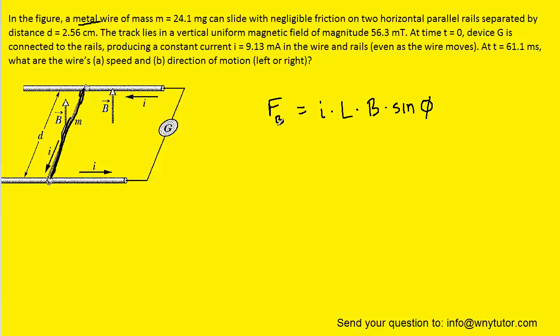So the magnetic force, which can be symbolized as F sub B, is equal to the product of the current that's flowing through the wire, the length of the wire, the magnitude of the magnetic field, and then the sine of an angle. Now this angle will be between the current, which is I, and the magnetic field, which is B.